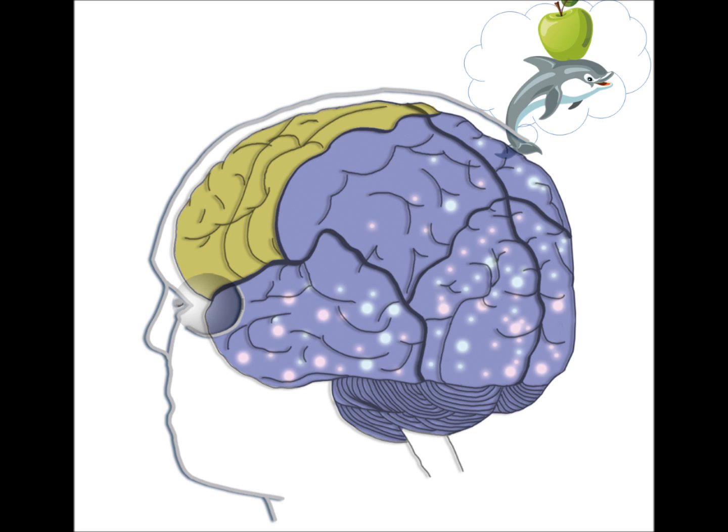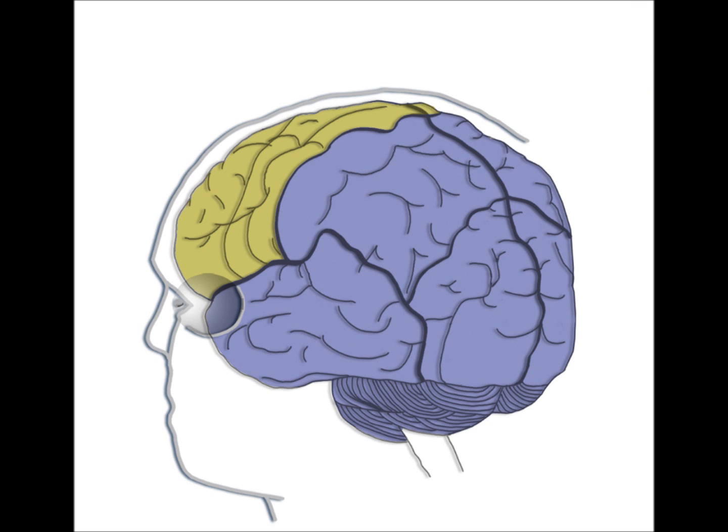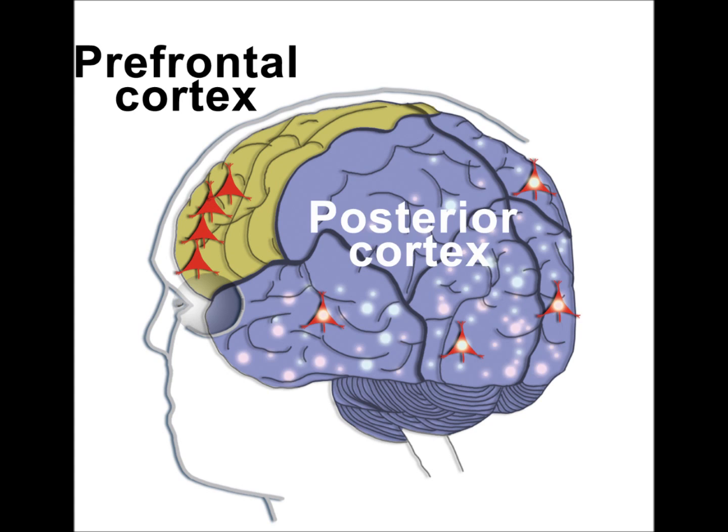Which part of the brain is responsible for orchestrating this synchronization? Functional MRI, as well as brain lesion studies, implicate the prefrontal cortex, the area just behind your forehead. The prefrontal cortex can be viewed as a puppeteer controlling its puppets, memories encoded in neuronal ensembles stored in the posterior cortex.